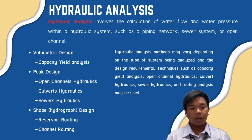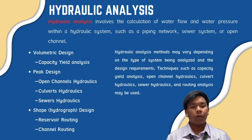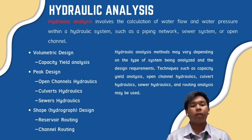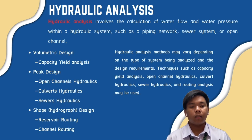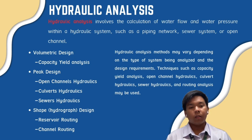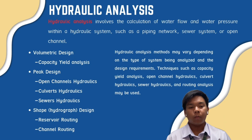After hydrologic analysis comes hydraulic analysis, which focuses on piping networks, sewer systems, or open channels, and involves calculation of water flow and pressure within the hydraulic system. The three design types are: volumetric design (capacity-yield analysis), peak design (open channel, culvert, and sewer hydraulics), and shape or hydrograph design (reservoir routing and channel routing).